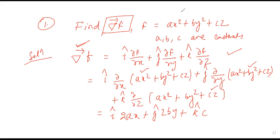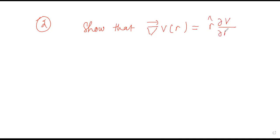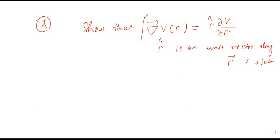The second question: show that ∇v = r̂(∂v/∂r), where r̂ is the unit vector along the position vector r, and v is a scalar function. We need to prove that the gradient of a scalar potential function v can be written as r̂(∂v/∂r).